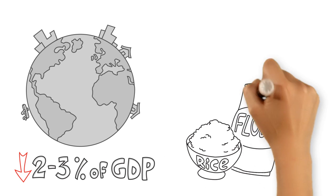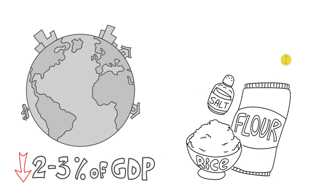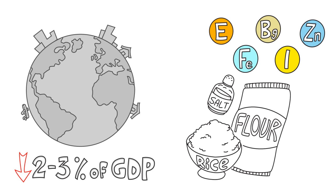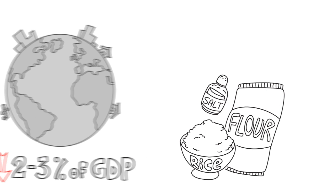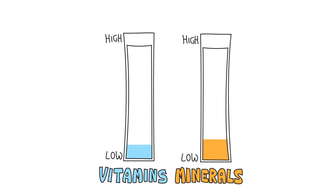Food fortification with essential micronutrients including iodine, iron, folate, and vitamins A and D is one of the most cost-effective ways to improve micronutrient intakes without requiring any change to the diet.